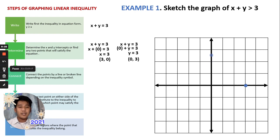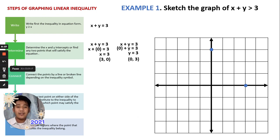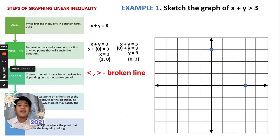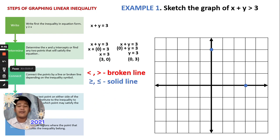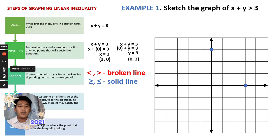We connect the two points. What line are we going to use — broken or solid? We determine this by identifying the inequality symbol. If the inequality uses less than or greater than, we use a broken line. If it uses greater than or equal to or less than or equal to, we use a solid line. Since our inequality symbol is greater than, we use a broken line.